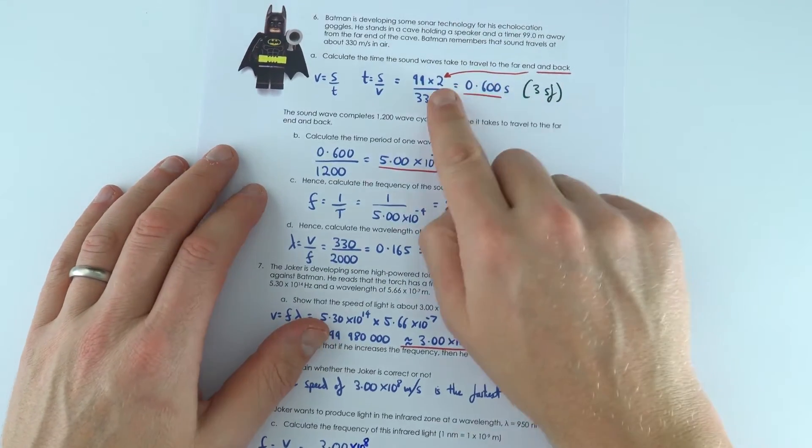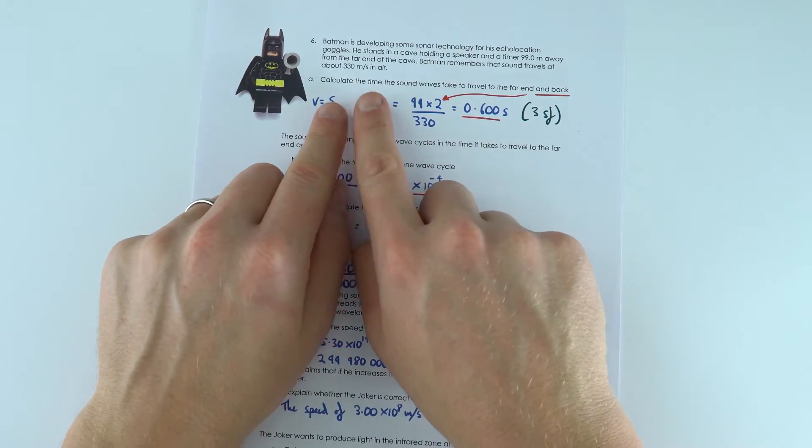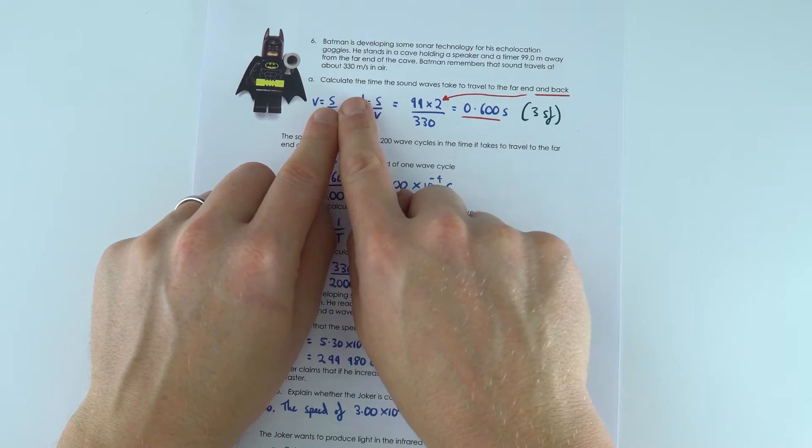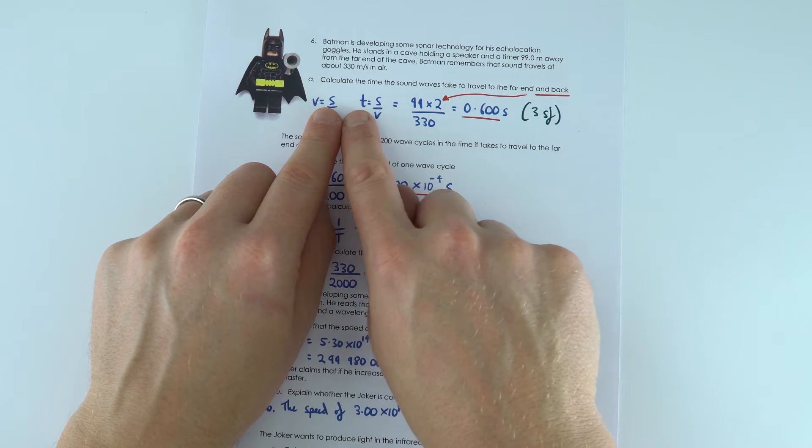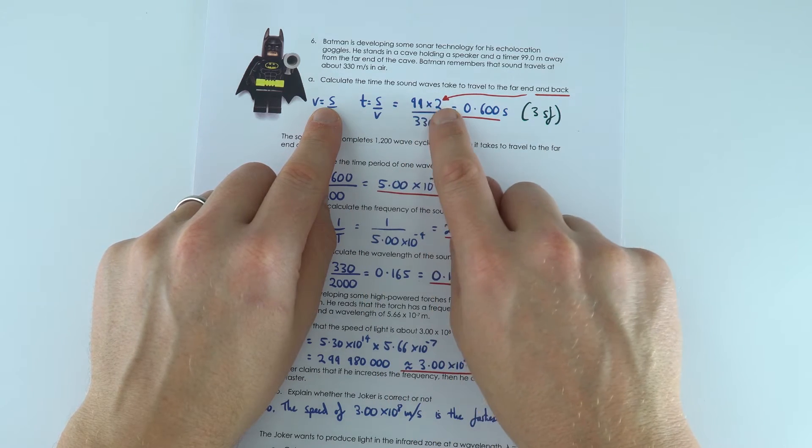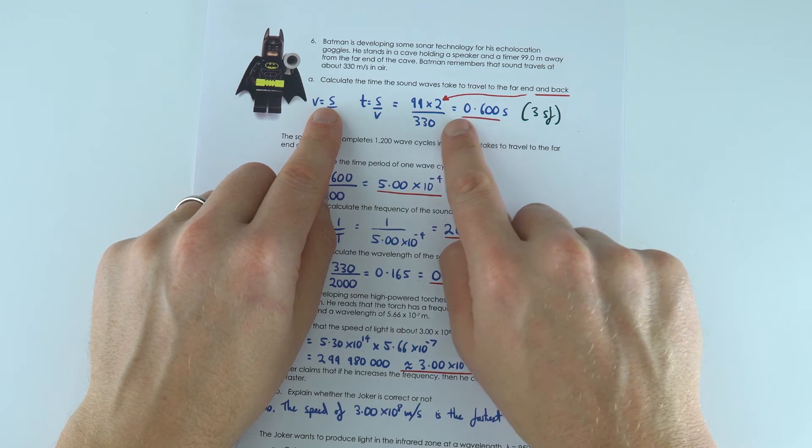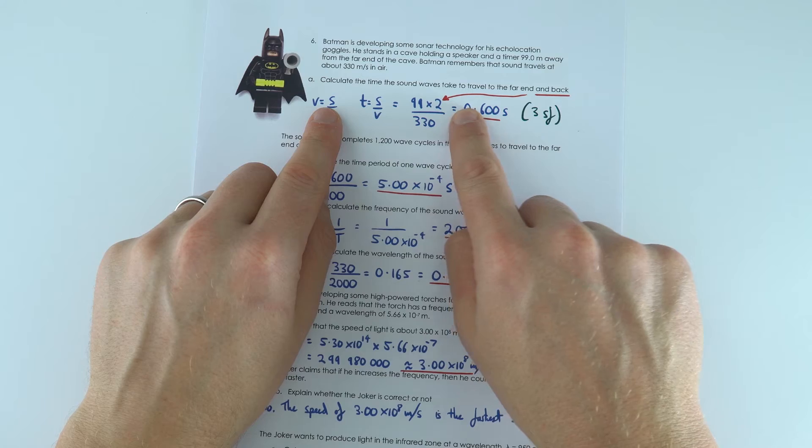Now on the second side we've got a question where we've got a sound wave which is being emitted, hitting the end of a cave, and then being reflected. And although the distance might be 99 meters, the distance traveled by that wave is 99 meters times 2. So don't forget multiplying that by 2 to work out the time it took to get there and get back again.